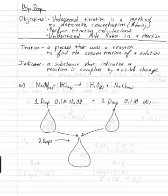First off, titration is just a process that uses a reaction to find the concentration of a solution, and titrations use an indicator. An indicator is a substance that changes visibly when the reaction is complete.